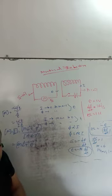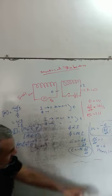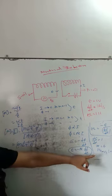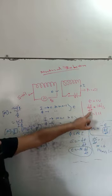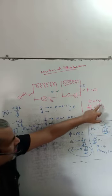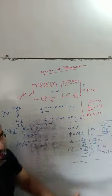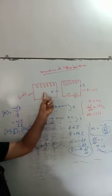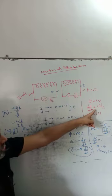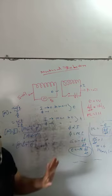An EMF induced in one coil due to unit rate of change of current in another coil is called mutual inductance. The SI unit of mutual inductance is the henry — same as self inductance. The definition of 1 henry: when epsilon equals 1 volt and the rate of change of current dI/dt is 1 ampere per second, then that mutual inductance becomes 1 henry. That means 1 volt of EMF induced in one coil due to a rate of change of current of 1 ampere per second in another coil is called 1 henry.